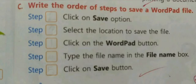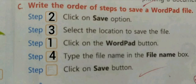C number question: write the order of steps to save a WordPad file. Here steps are given, so you have to give numbers to it. To save a file, step one is click on the WordPad button. Second step will be click on Save option. Third step, select the location to save the file. Number four step will be type the file name in the file name box. And the last step is click on the Save button.